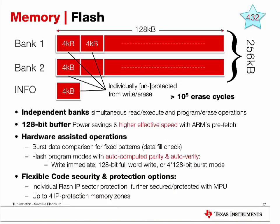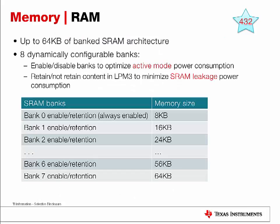This feature will be discussed in more detail in a later section of the training. On MSP432, there are 64 KB of SRAM memory, broken up into 8 dynamically configurable banks, each with 8 KB. For each SRAM bank, there are two options to optimize power consumption: you can enable or disable the banks entirely to shut off power, or you can choose to retain or not retain the content in LPM3 to minimize SRAM leakage power consumption.